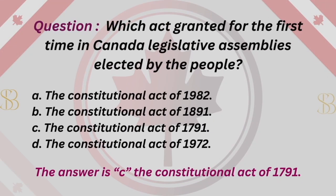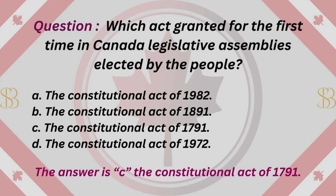Question: Which act granted for the first time in Canada Legislative Assemblies elected by the people? A. The Constitutional Act of 1982. B. The Constitutional Act of 1891. C. The Constitutional Act of 1791. D. The Constitutional Act of 1972. The answer is C. The Constitutional Act of 1791.